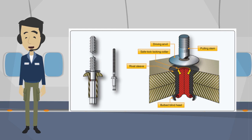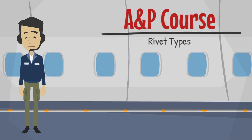Blind rivets are a different type of rivet. A pulling tool is used to deform the head, as shown in the picture, by pulling on the stem. Afterwards, the stem breaks off. This concludes this training session. We hope you found it useful.